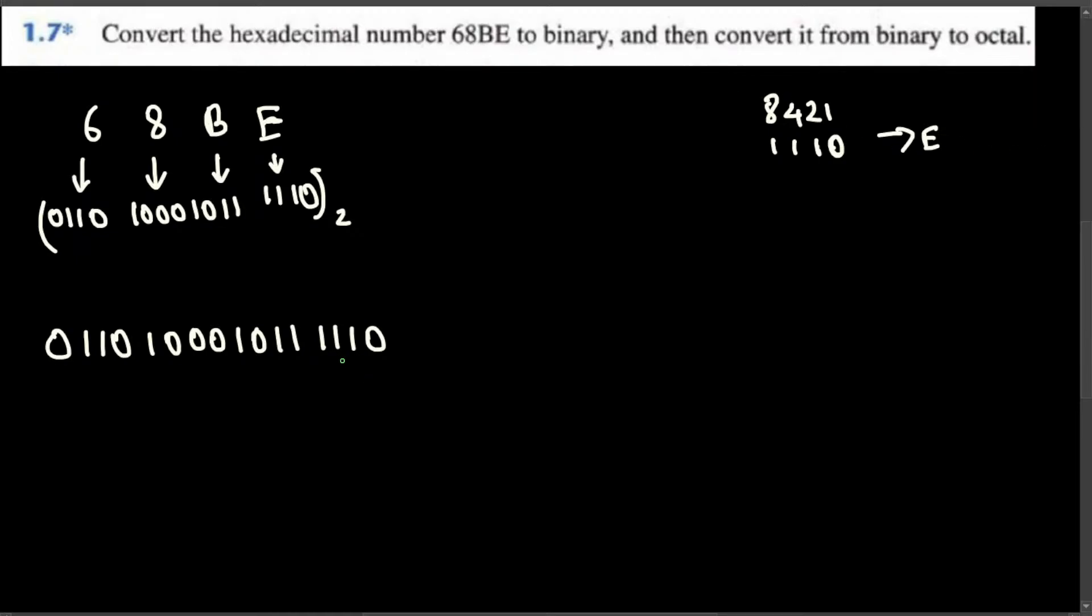So here I start here. For hexadecimal to convert binary we use 4 numbers, but for octal we use 3: 4-2-1 only. We get it on the same because 4-2-1, if you add 4, 2, and 1, that's 7.